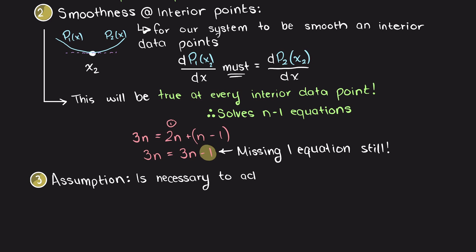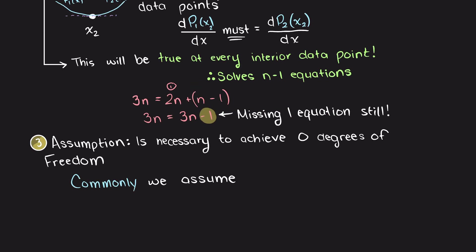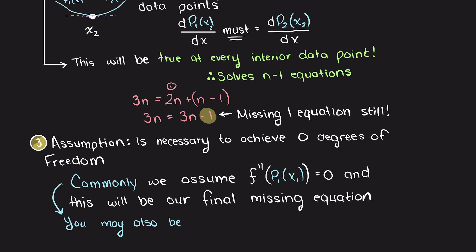Here it is common practice to assume that the curvature of our first term is zero, meaning the second derivative of our first spline is zero, and thereby making our first polynomial a linear spline, but the remaining curves will have curvature.